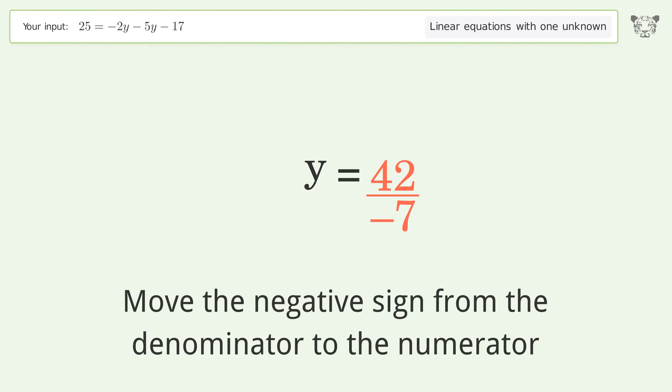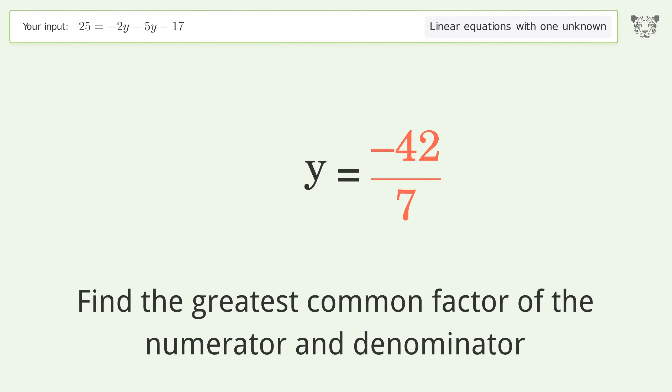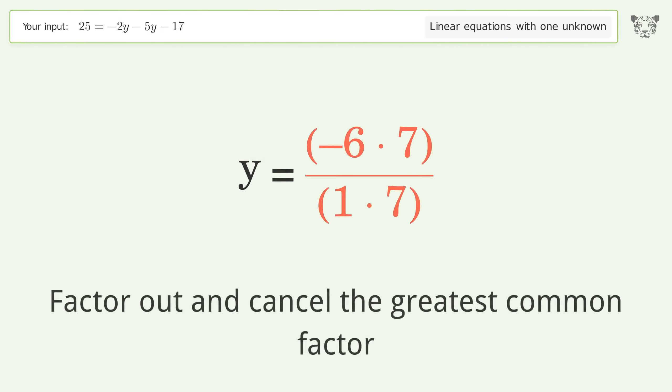Move the negative sign from the denominator to the numerator. Find the greatest common factor of the numerator and denominator. Factor out and cancel the greatest common factor.